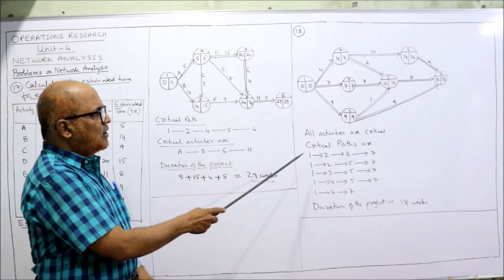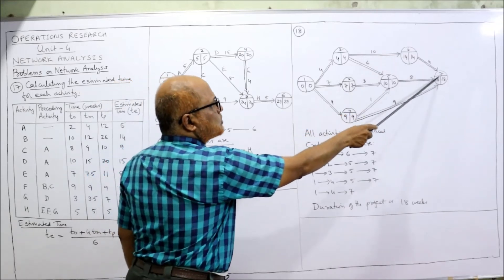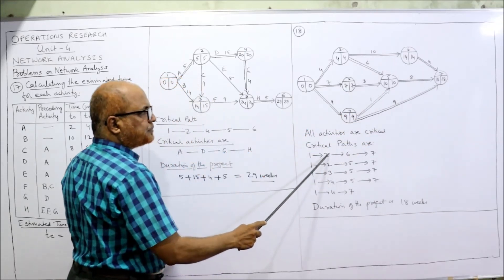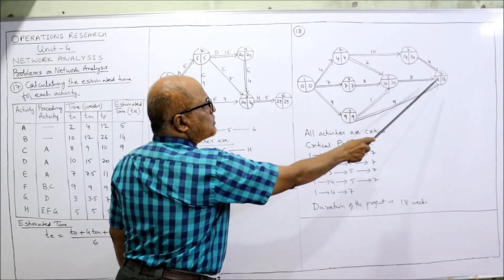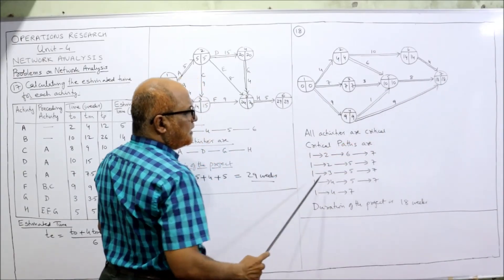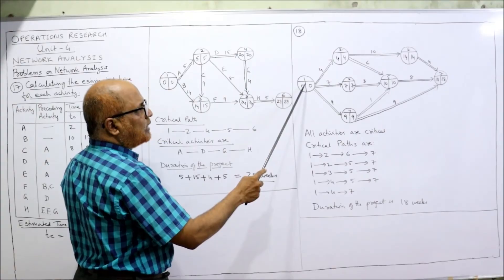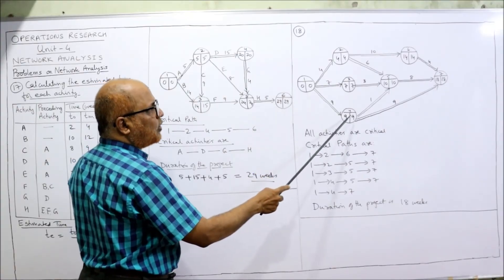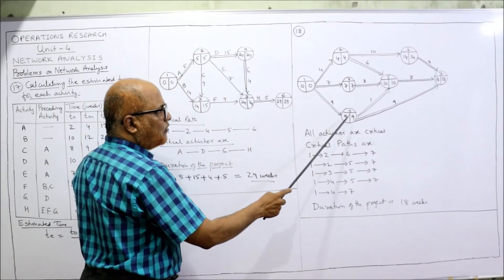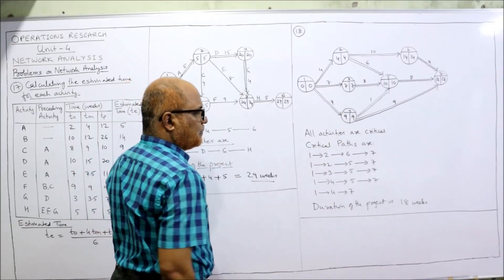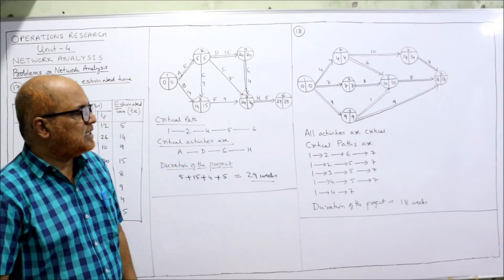The five critical paths are: (1) 1→2→6→7, (2) 1→2→5→7, (3) 1→3→5→7, (4) 1→4→5→7, and (5) 1→4→7. All activities are critical. The duration of the project is 18 weeks.